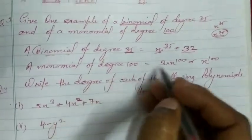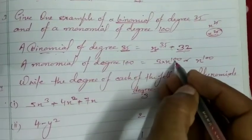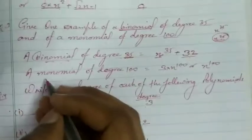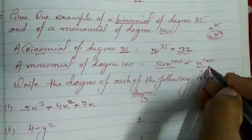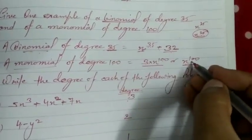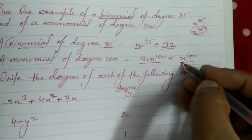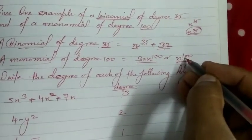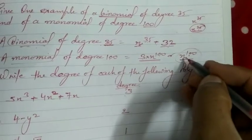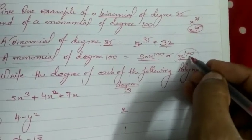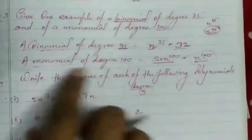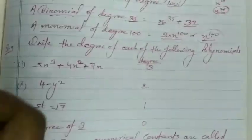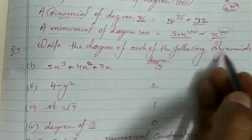For the monomial of degree 100, we write x¹⁰⁰ or t·x¹⁰⁰. Monomial means a polynomial with a single term, so we write just x¹⁰⁰ with no addition or subtraction of any other term. The degree is 100 as shown by the power. This is the example of a monomial of degree 100. Question 4 asks to write the degree of each of the following polynomials.